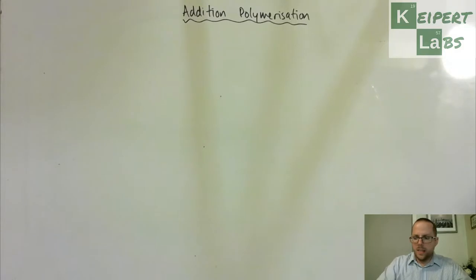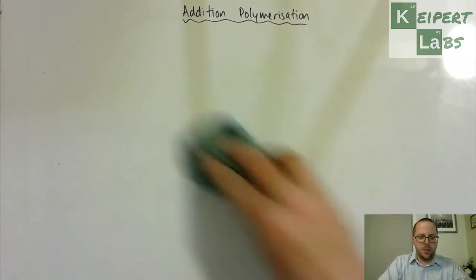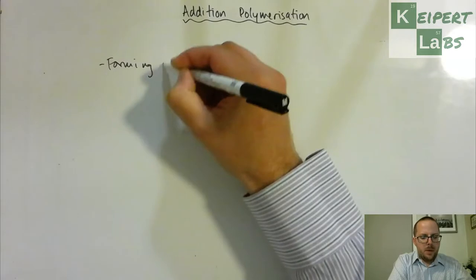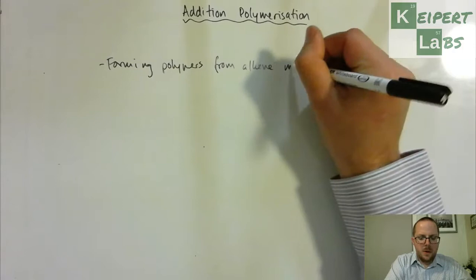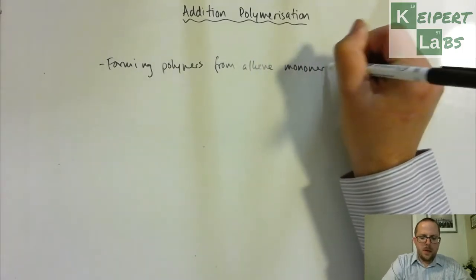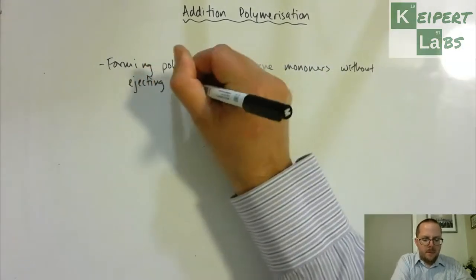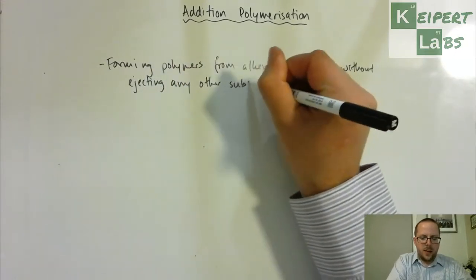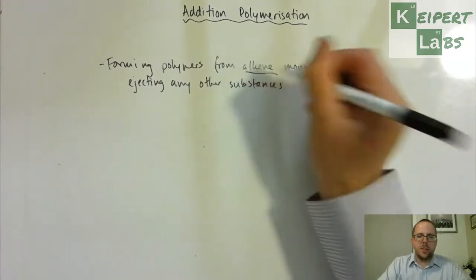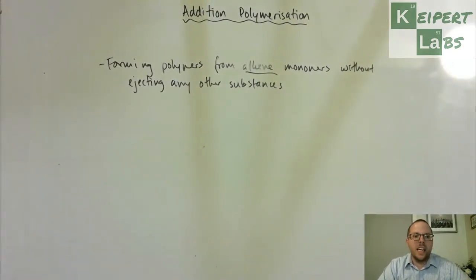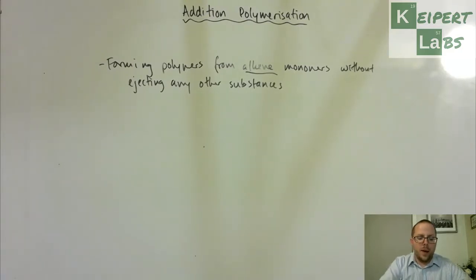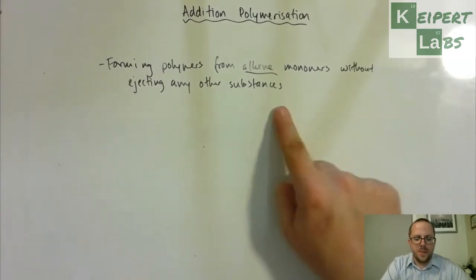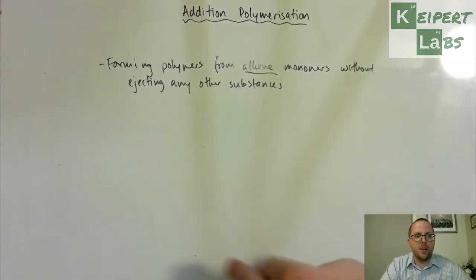So what we're doing here is that we are forming polymers from alkene monomers without ejecting any other substances. So we've got alkenes, and unlike in condensation polymerization where we're ejecting a water molecule for every covalent bond that's connected, this doesn't involve loss of any other substances.